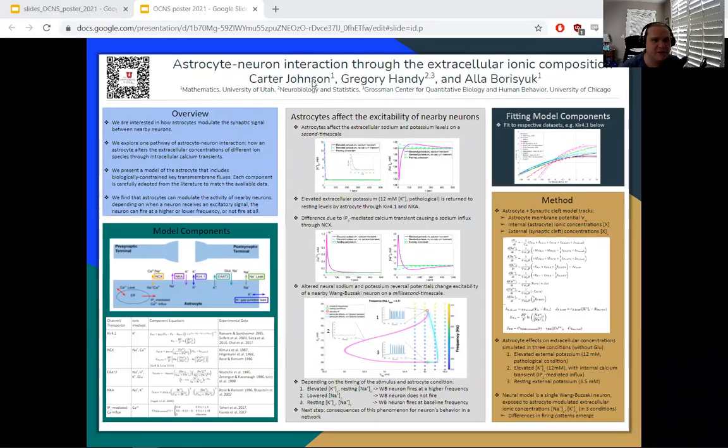Our poster is on astrocyte-neuron interaction through the extracellular ionic composition, and this work is with Greg Handy and Alaboris Young.